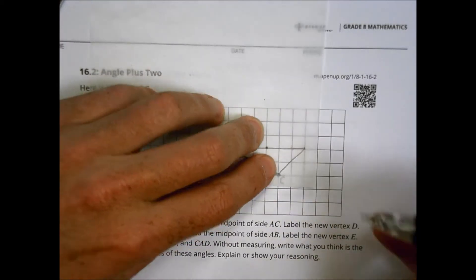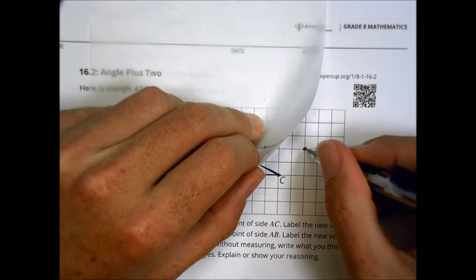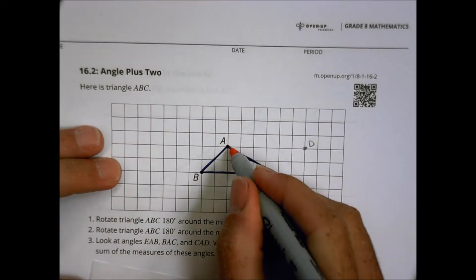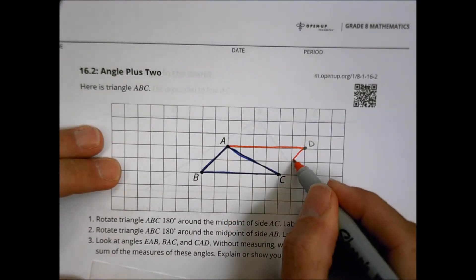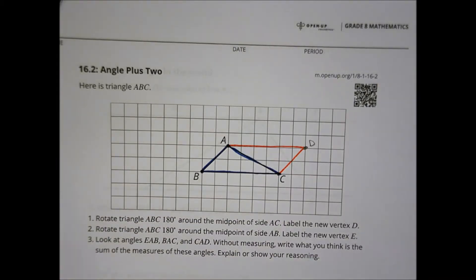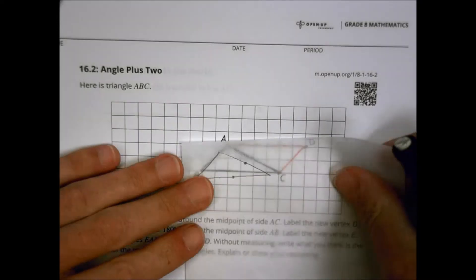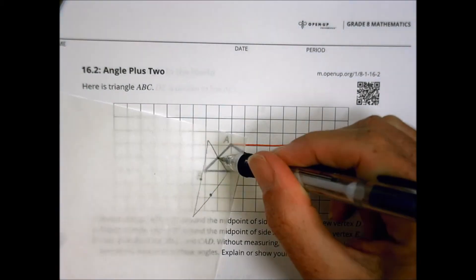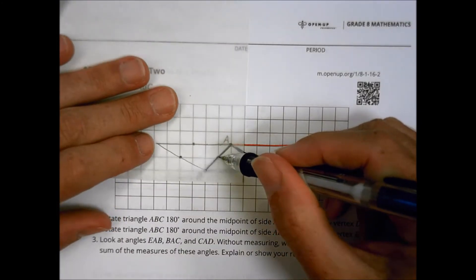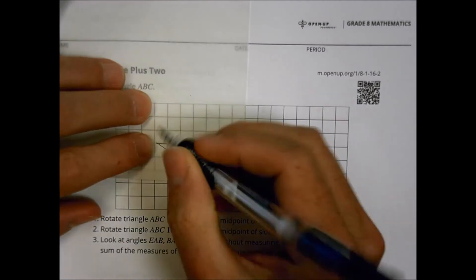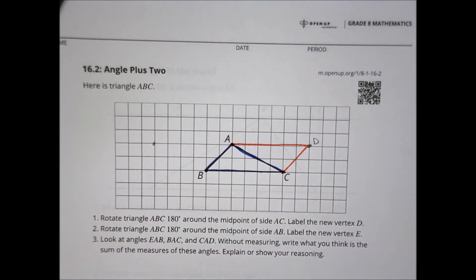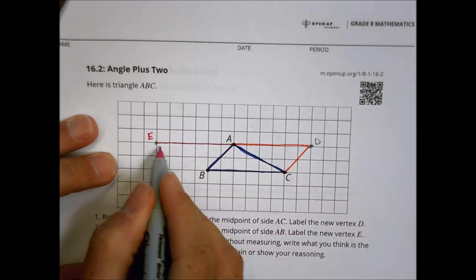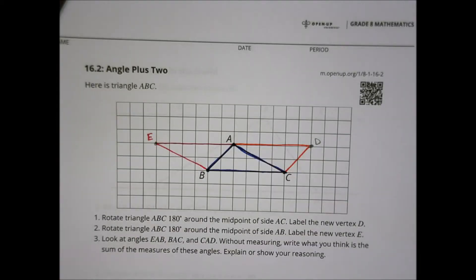It says to label the new vertex as D, so we put that right there and call it D. I can then draw the new triangle with vertex D. The next step said to rotate triangle ABC around the midpoint of side AB. Our midpoint for side AB is right here in the middle. We rotate it around 180 degrees so that line snaps in place, and it says to label that point as vertex E. I connect my lines and we end up with a shape that looks like this.